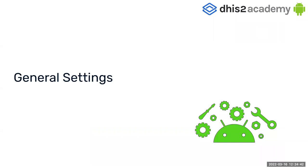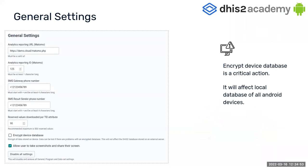Now let's talk about the settings. The first kind of settings we have access to in the Android settings web app is General. General settings include configurations such as SMS configuration, analytics, reserved values, and encrypt device database.